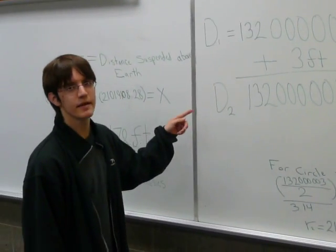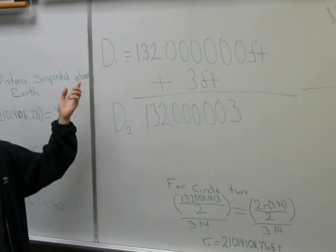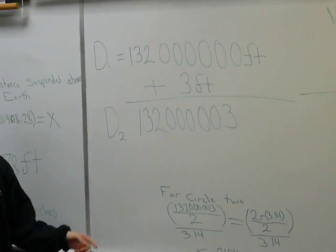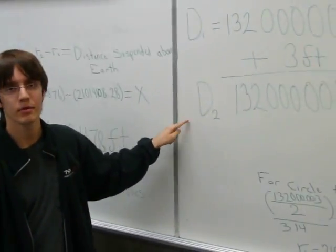Okay, so the distance that we were given was 132 million feet, and that's V1, and V2 is that plus 3 feet.